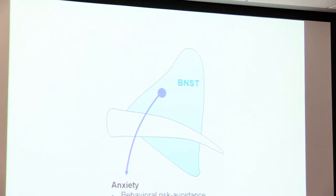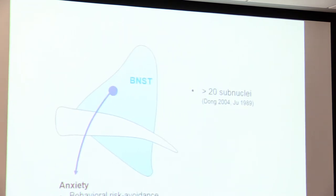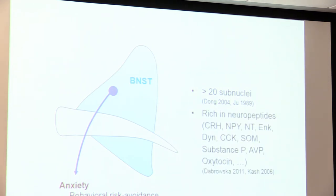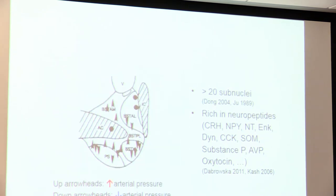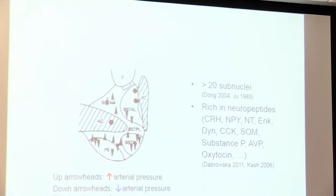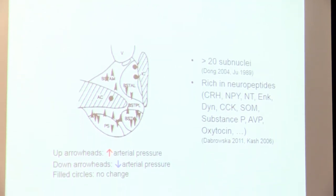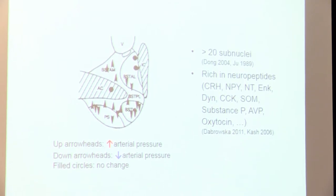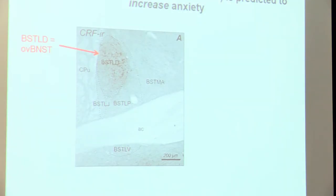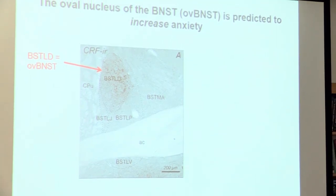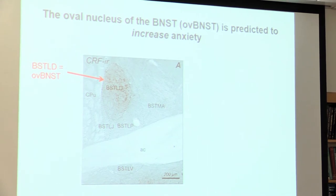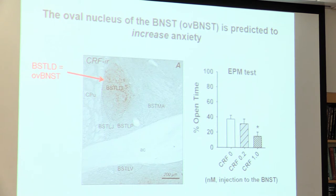However, the BNST is not just a simple mass of brain tissue. Anatomical studies have defined more than 20 sub-nuclei in this structure, with many neuropeptides involved. Electrical stimulation of different sub-parts of the BNST elicited opposite effects in arterial pressure. The BNST is one of the most anatomically and functionally heterogeneous brain regions. We noted that the oval nucleus of the BNST expresses a very high level of corticotropin-releasing hormone, a stress-related hormone that increases anxiety when injected into the BNST. We hypothesized that activity in the oval BNST would increase anxiety.